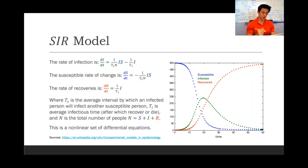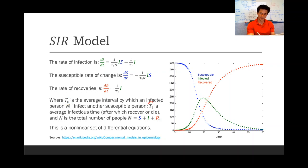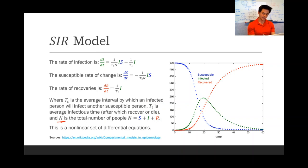So on average, someone who's infected will infect other people by an interval of T sub s, and someone who is infected will stop being infectious, on average, after some amount of time T sub i. N is the total population, which is the sum of all three of these variables.